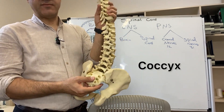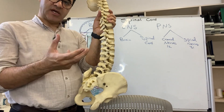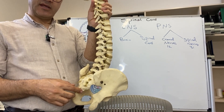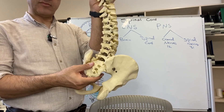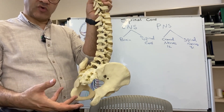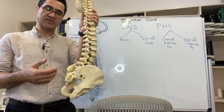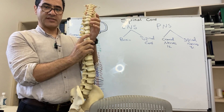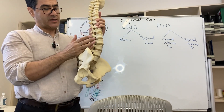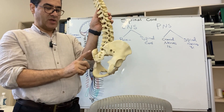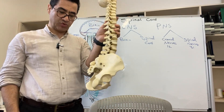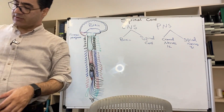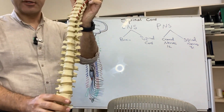The sacrum, during intrauterine life in the fetus, is comprised of five sacral vertebrae that fuse together to make a single bone. The coccyx contains four coccygeal bones that also fuse together. So in total: seven cervical plus 12 thoracic equals 19, plus five lumbar equals 24, plus one sacrum equals 25, plus one coccyx equals 26 vertebrae in adults.